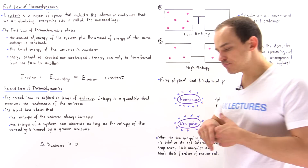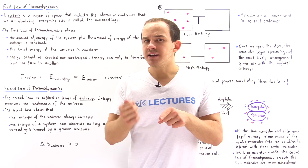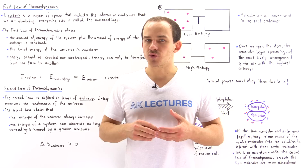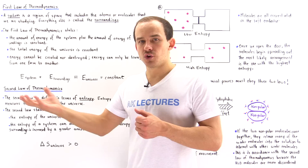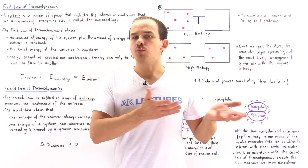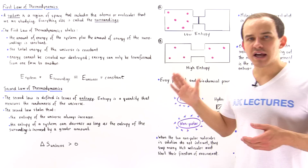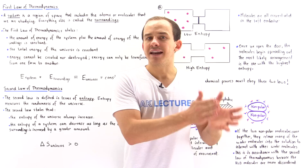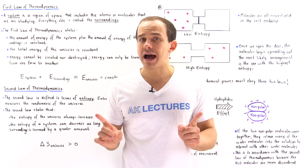Let's begin with the first law of thermodynamics. Any region of space that contains the atoms or molecules that we're studying is our system, and all the molecules and atoms found outside the system is our surroundings. The sum of the molecules of our system and all the molecules in our surroundings gives us the molecules in our universe. The first law of thermodynamics tells us that the sum of the energy of our system and the energy of our surroundings is always equal to the energy of the universe.